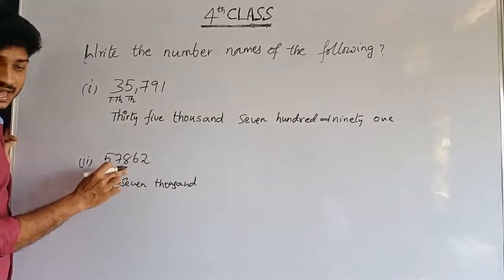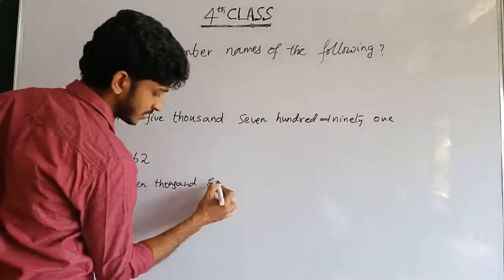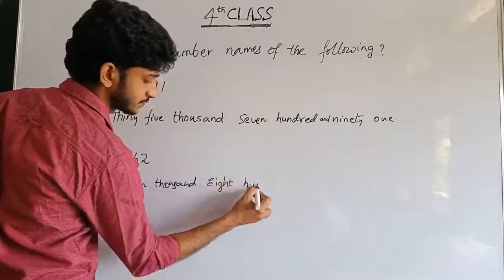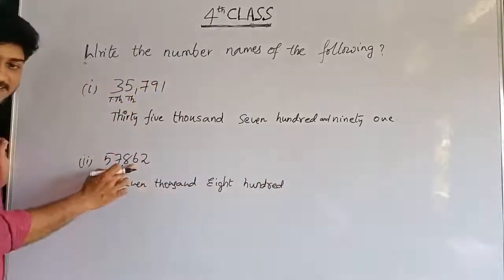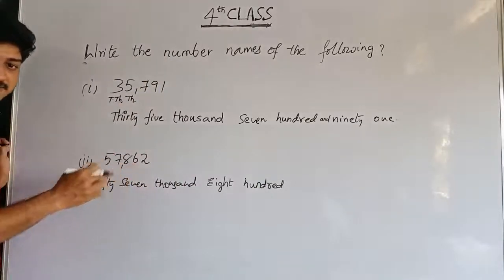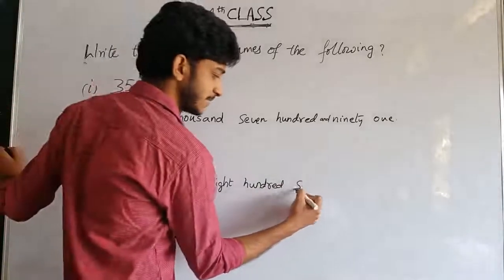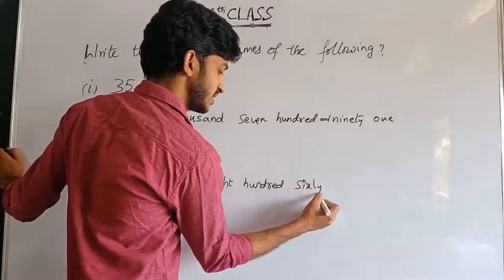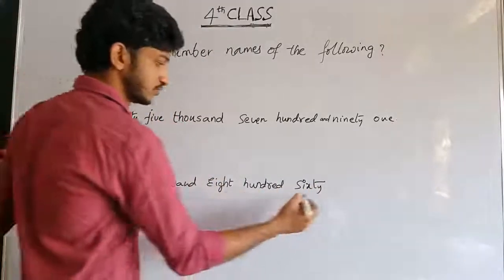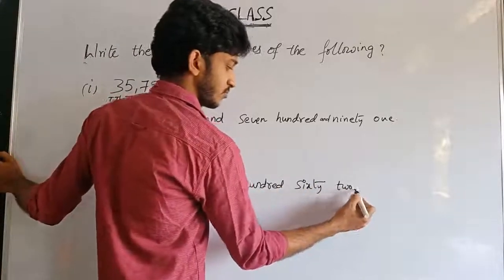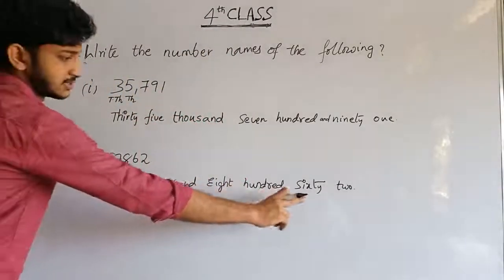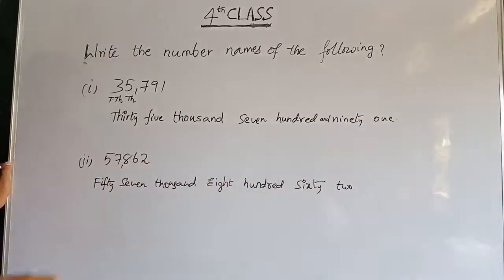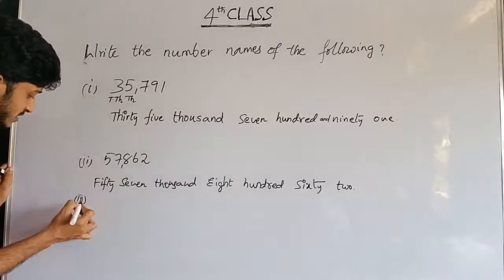Hundreds: eight is in hundreds place, so eight hundred. See here, six is in tens place — the value of six is sixty. And two is in ones place. So 57,862 is fifty-seven thousand, eight hundred and sixty-two.